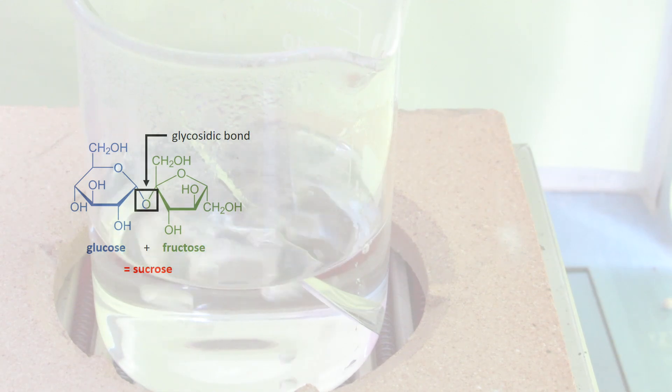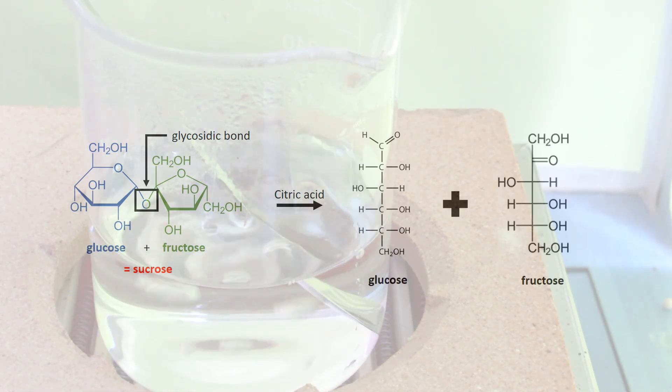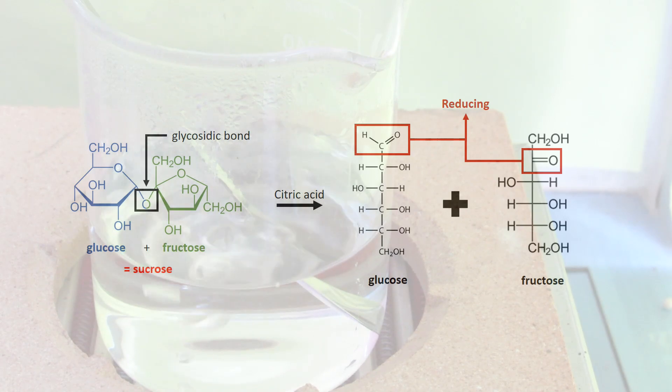When a sucrose molecule undergoes hydrolysis, its glycosidic bond breaks and a glucose molecule and a fructose molecule are formed, which can be used as active reducing sugars. The hydrolysis is really slow under normal conditions; solutions of sucrose can sit for years with negligible change. However, in high temperatures and low pH, the hydrolysis can be speeded up and the reaction will proceed very rapidly.